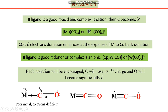If a ligand is a pi donor — meaning it is a sigma donor as well as a pi donor — sigma donor ligands form a single bond with the metal center, while pi donor ligands also offer electrons for pi bonding. If a ligand acts as both sigma donor and pi donor, and the complex is anionic, we observe the inverse phenomena compared to the electron-withdrawing ligand case.